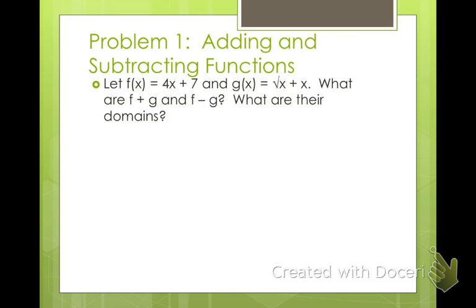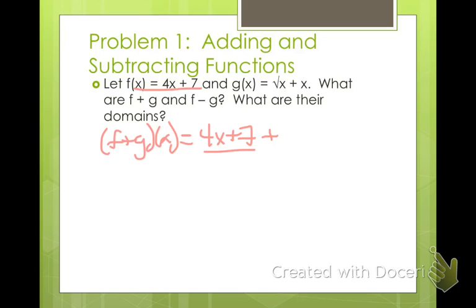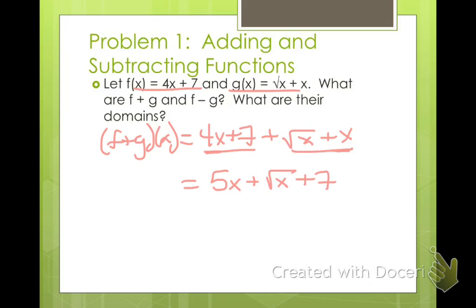So let's get started. Let f of x be 4x plus 7 and g of x be the square root of x plus x. What are f plus g and f minus g, and what are their domains? Well, f plus g of x means f of x, 4x plus 7, plus g of x, square root of x plus x. So we add our like terms — we have 4x and x — giving us 5x plus the square root of x plus 7. We can't combine any further, so we leave it like that.